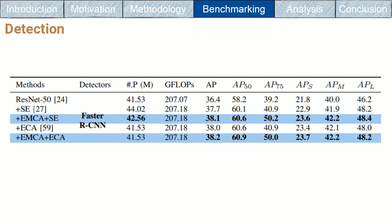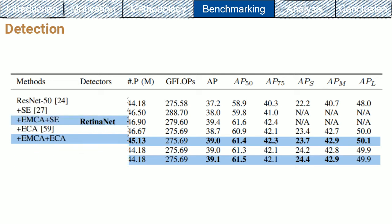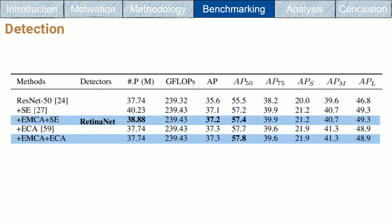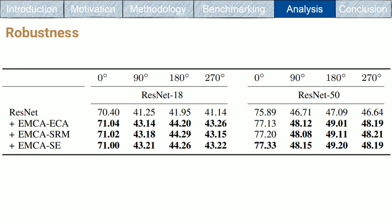For the detection task, we used MS-COCO dataset using Faster-RCNN, Mask-RCNN, and RetinaNet. To prove the effectiveness of our EMCA module, we assess it using another downstream task, which is instance segmentation using Mask-RCNN on the MS-COCO dataset.